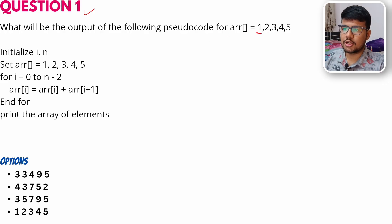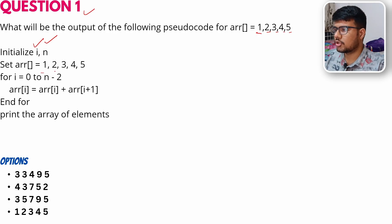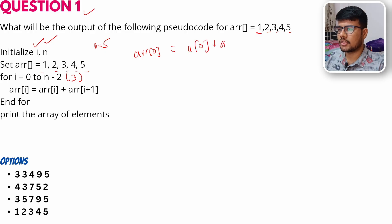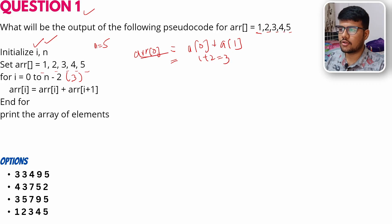Question 1: What will be the output of the following pseudocode? For array [1, 2, 3, 4, 5], initialize i and n. The loop runs from 0 to n minus 2. Since n is 5, the loop runs till index 3. Array[0] = Array[0] + Array[i+1], so Array[0] = 1 + 2 = 3.